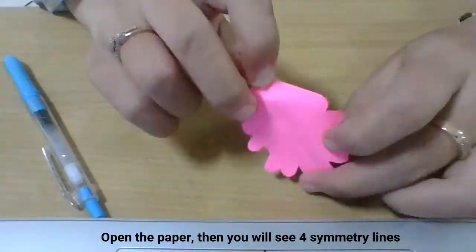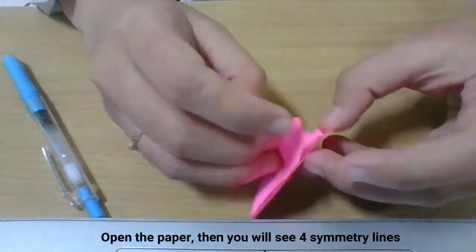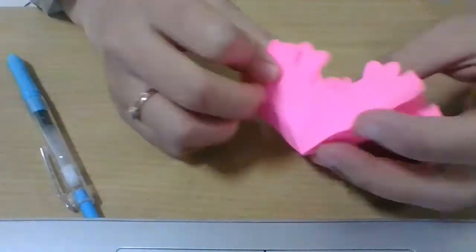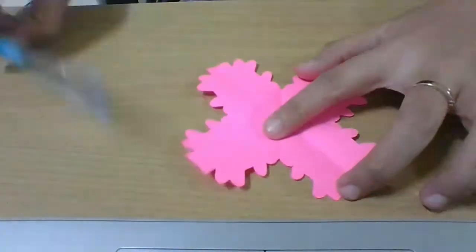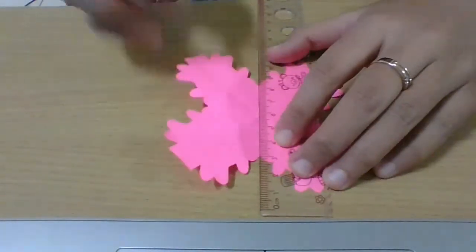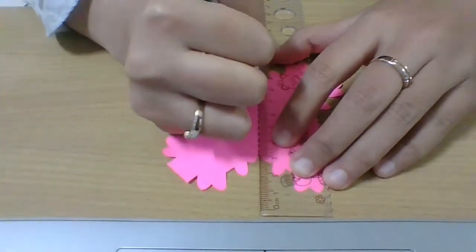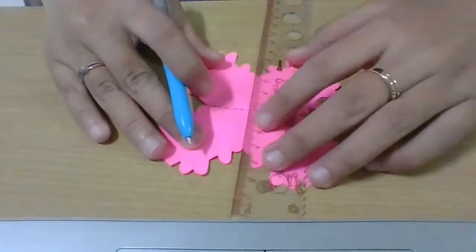After we cut, we can open it and draw the symmetry lines. Then you will see there are four symmetry lines: one vertical, one horizontal, and two diagonals.